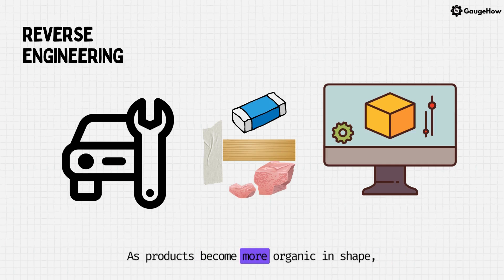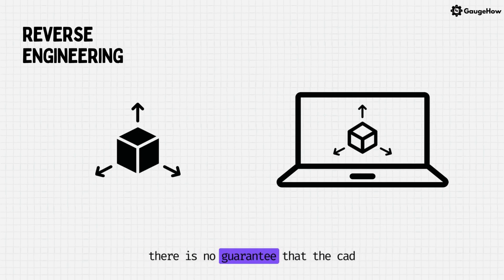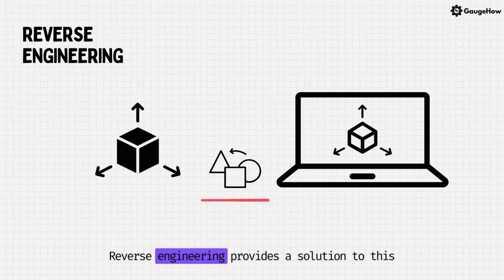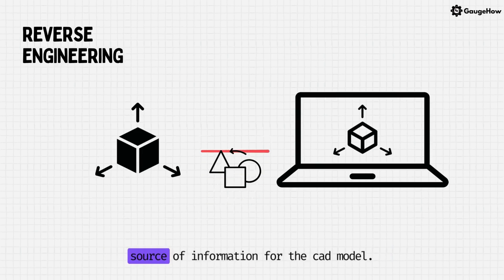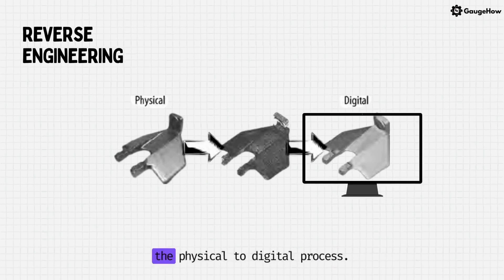As products become more organic in shape, designing in CAD becomes more challenging and there is no guarantee that the CAD representation will replicate the sculpted model exactly. Reverse engineering provides a solution to this problem because the physical model is the source of information for the CAD model. This is also referred to as the physical to digital process.